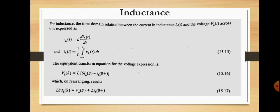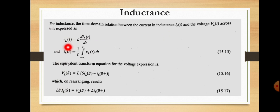Next we consider the inductance, where we want to find the transform impedance and transform admittance of the inductor. Starting from the basic equation of the inductor: the time domain relation between current il(t) and voltage Vl(t) across the inductor is Vl(t) = L × d(il(t))/dt.